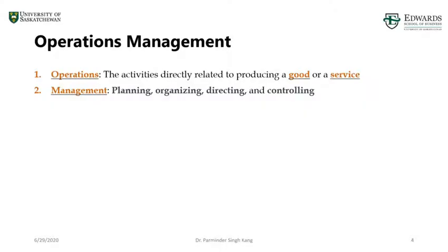Next comes directing and controlling, which ensures your operations are running smoothly. One example: when you go shopping you sometimes see only a few tills open because the queues are not very long. As queues build up, more tills are opened — that's directing the operation. What we're trying to control is the queue length, so there aren't too many people waiting, in order to ensure a higher customer service level is achieved.